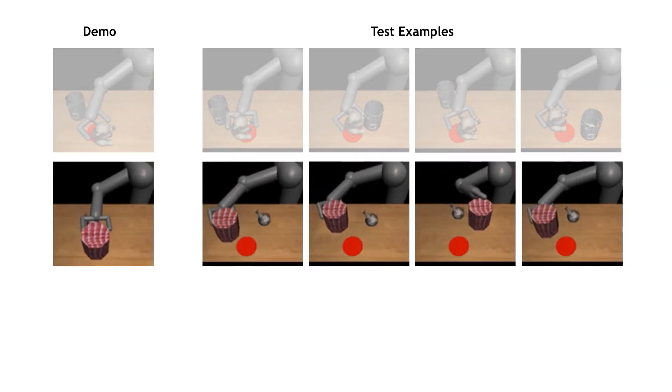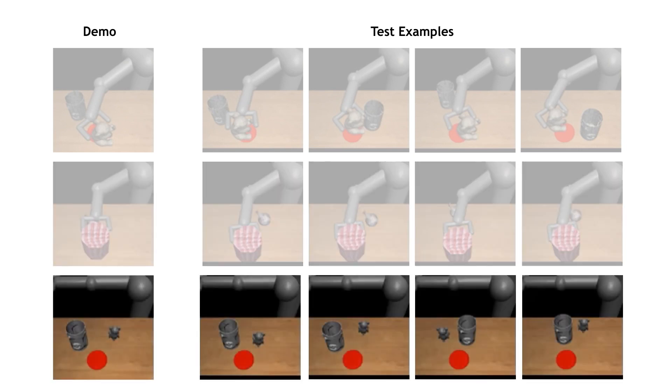Once again, a single demonstration of a previously unseen task is provided on the left, with the test variations of the task on the right.